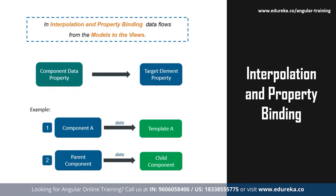Talking about interpolation binding: interpolation binding is used to return HTML output from TypeScript code, that is from the components to the views. The template expression is specified within double curly braces. Through interpolation, strings can be added into text that is present between HTML element tags and within attribute assignments. These strings are calculated using template expressions.